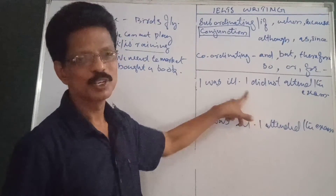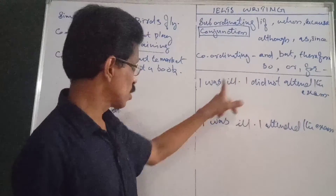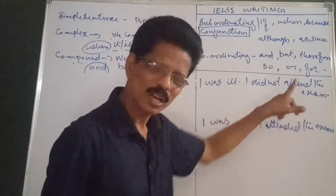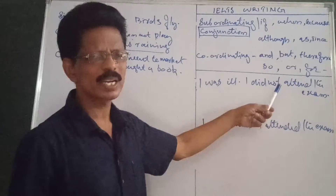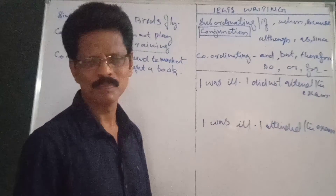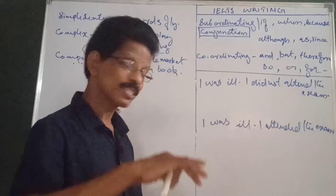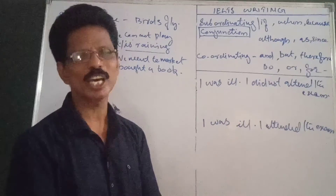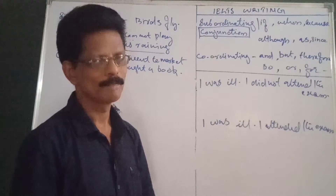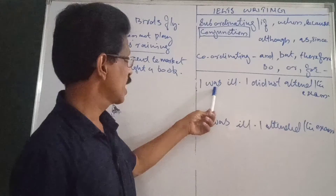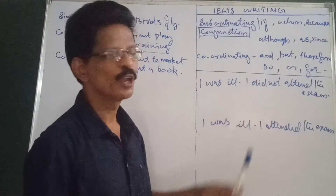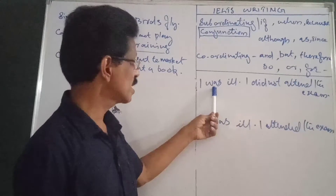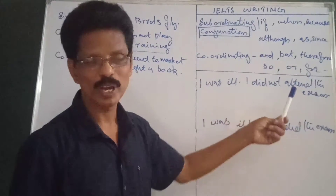Into compound — two main clauses: 'I was ill, therefore I did not attend the examination.' Or: 'I was ill, so I did not attend the examination.' Into a simple sentence — not two simple sentences, but one single simple sentence. This means one finite verb should be changed into a non-finite.